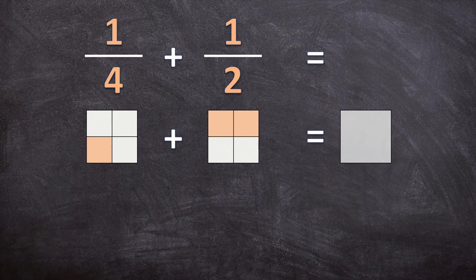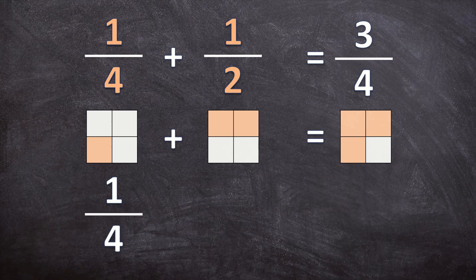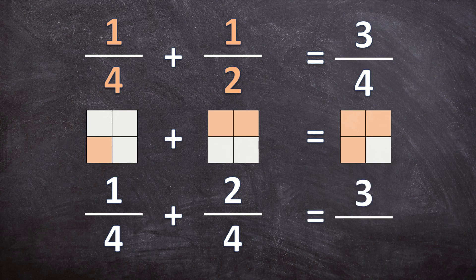We have an identical shape divided into four equal pieces, and we can see that we colored in one, two, three pieces altogether. So our answer for 1 over 4 plus 1 over 2 is 3 over 4. To write out how our fractions look: we have 1 colored in over 4, plus 2 colored in out of 4, and our answer is 3 over 4.